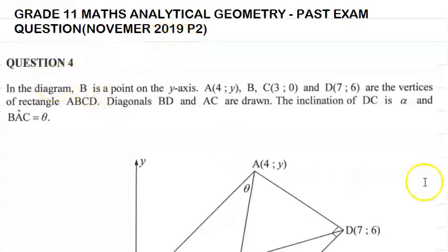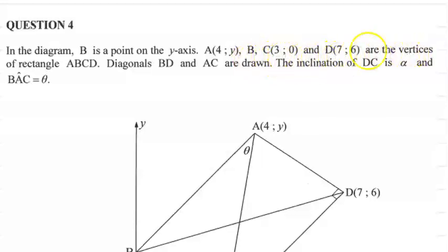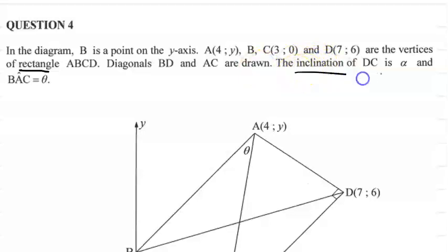The question reads: in the diagram, B is a point on the y-axis, A is (4, y), B is (3, 0), C is (3, 0), D is (7, 6) — these are the vertices of a rectangle ABCD. The diagonals BD and AC are drawn. The inclination of DC is alpha and angle BAC is eta.